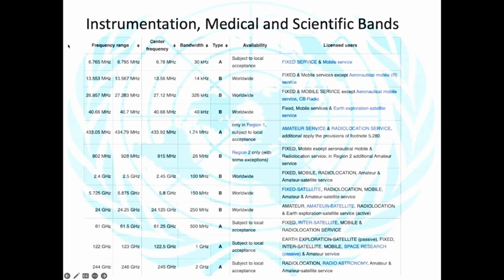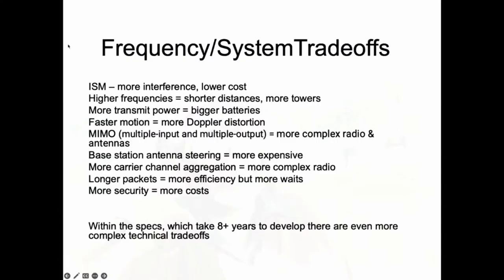You have to pick where you're going to be on that chart, buy a radio from one of our sponsors, make sure it's certified, and then figure out what you're going to do with your antenna, software, and power supply. The ISM band is great because it doesn't require a lot to use it — you don't have to buy spectrum from the government. In the case of the US government, they used to just give it away, but now they've discovered they can sell it.